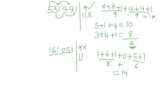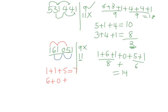We check if 161,051 is divisible by 11. We add the digits in the odd positions minus the digits in the even positions. The digits in the odd positions are 1 plus 1 plus 5, which gives us 7. The digits in the even positions are 6 plus 0 plus 1, which gives us 7. The difference between the first sum and the second sum is 7 minus 7, which is 0. Therefore this number is divisible by 11. Thank you for listening. This is the end of this lesson.